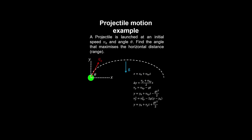A projectile is launched at an initial speed v0 and an angle theta. We are asked to find the angle that maximizes the range. Taking our coordinate system with the origin at the initial position of the projectile and the vertical directions as shown, the range is x equals r.